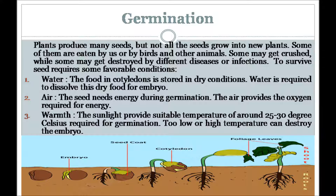Germination: Plants produce new seeds, but not all seeds grow into new plants because some are eaten by birds and other animals. Some may get crushed, while some may get destroyed by disease or infections. The seeds that survive still require favorable conditions to grow. Water is required to dissolve the dry food stored in cotyledons for the embryo. Air provides the oxygen needed for energy during germination. Sunlight provides a suitable temperature of around 25 to 30 degrees Celsius required for germination. Too low or too high a temperature can destroy the embryo.